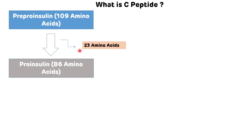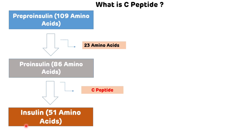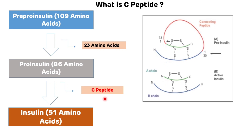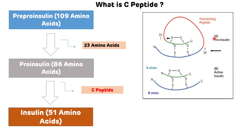After the removal of these 23 amino acids, this proinsulin is transported to the Golgi body. In the Golgi body, proinsulin is converted into insulin, which has 51 amino acids, by removal of the connecting peptide or C-peptide. This picture shows the conversion of proinsulin into active insulin.